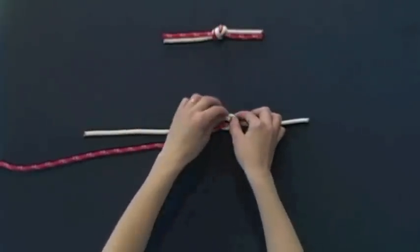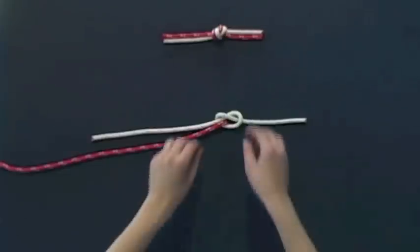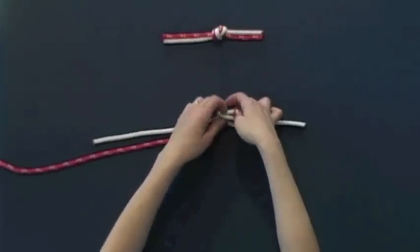This time you will take the second rope and follow it through the knot alongside the white piece.